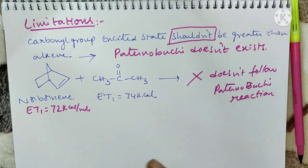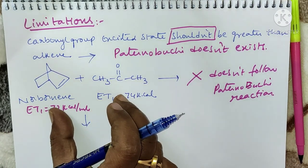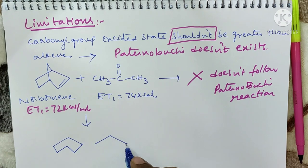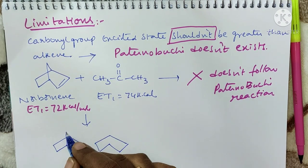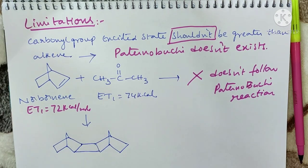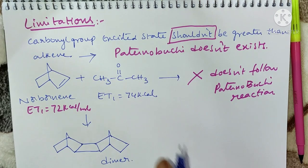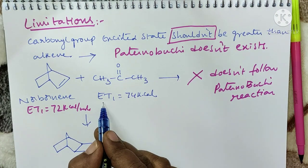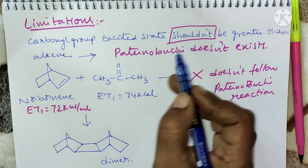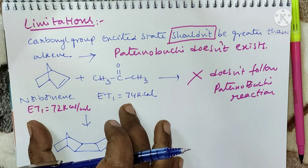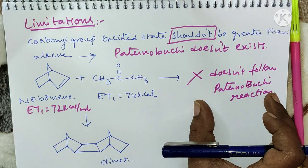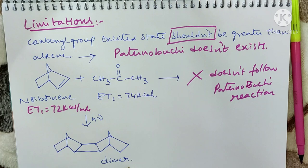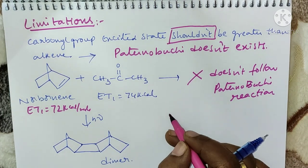When the carbonyl group's triplet excited state energy exceeds that of the alkene, the Paterno-Büchi reaction is not followed. Instead, norbornene undergoes dimerization — a dimer is formed. So the key limitation is: the triplet excited state energy of the carbonyl group must not exceed that of the alkene.